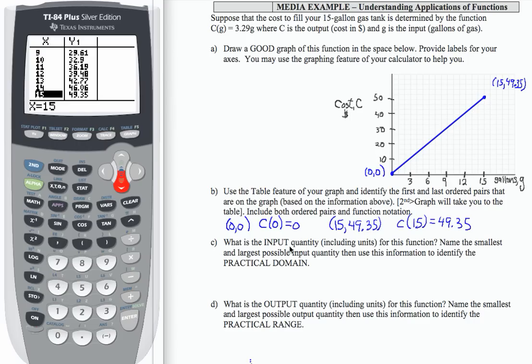So the input quantity is gallons of gas and the smallest and largest possible input quantities, we've kind of already talked about that. It's limited by the size of our gas tank. But our gallons is going to have to be bigger than or equal to zero because technically I could use zero and less than or equal to 15. If I translate that to interval notation, that would be [0, 15]. Notice this is not the same as an ordered pair. This is on the horizontal axis. These are input values only.